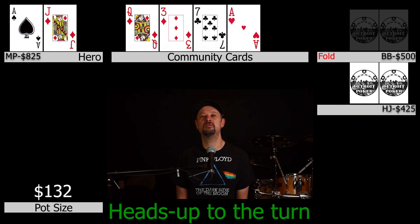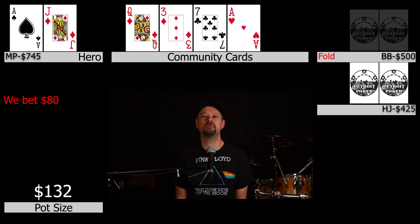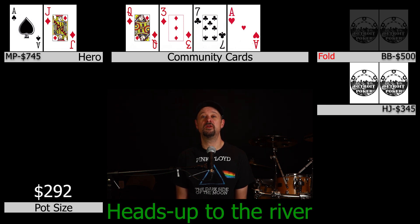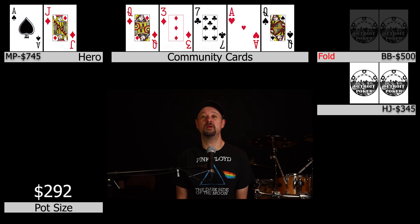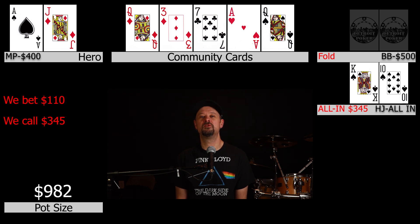We go to the turn heads up. The turn comes an ace of hearts — we make top pair. We bet $80 and the hijack thinks for a while and calls. We go to the river heads up. The river is a queen of spades — a pretty bad card. We decide to block-bet $110. The hijack hesitates five or ten seconds and announces all in. The dealer counts it up: $345. We go into the tank, consider his history — he's definitely capable of jamming as a bluff. We call $345 and he says 'nice call,' showing king-ten of spades — a total air ball. We scoop.